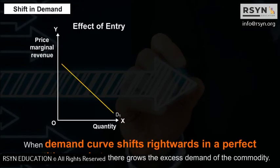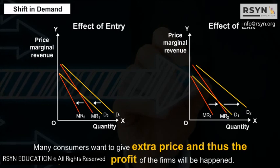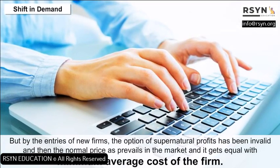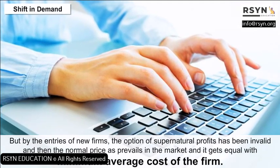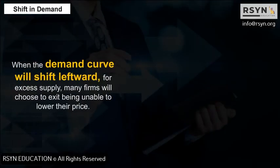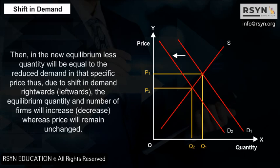Shift in Demand with Free Entry and Exit: When the demand curve shifts rightward in a perfectly competitive market, excess demand grows and consumers offer extra prices, generating supernormal profits for firms. Entry of new firms eliminates supernormal profits, and the normal price prevails, equaling the minimum average cost of the firm. When the demand curve shifts leftward, excess supply causes many firms to exit, unable to lower their price. In the new equilibrium, less quantity equals the reduced demand at that specific price. Thus, shifts in demand rightward or leftward change equilibrium quantity and number of firms while price remains unchanged.